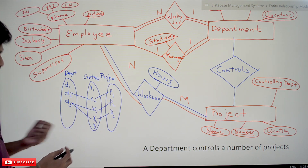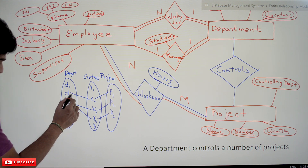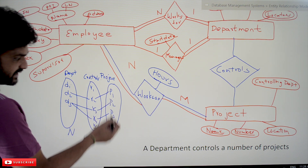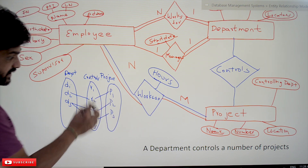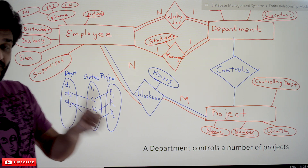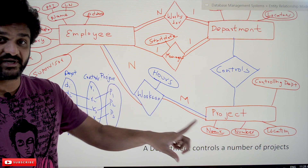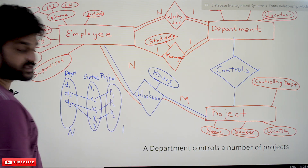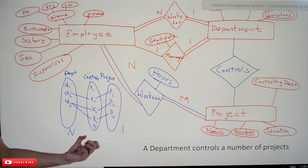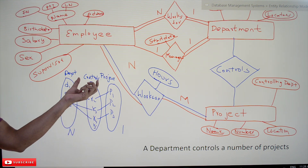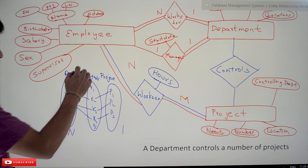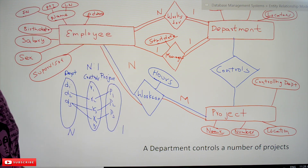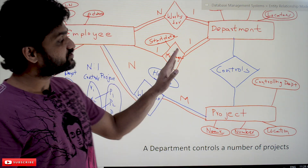The maximum participation of department is N, and the maximum participation of a project is 1 — a project should be under the control of only one department, not several. So the total cardinality ratio of the 'controls' relationship type is N to 1, or many-to-one. One-to-many does not make any difference in naming.